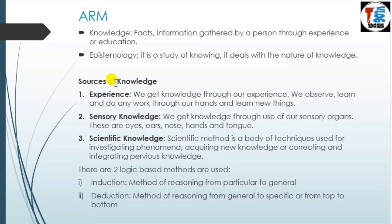Sources of knowledge. There are three types: experience, sensory knowledge, and scientific knowledge. We get knowledge through our experience — we observe, learn, and do work with our hands and learn new things. By doing activities, we gain experience which gives us direction and understanding, and such experience increases our knowledge.